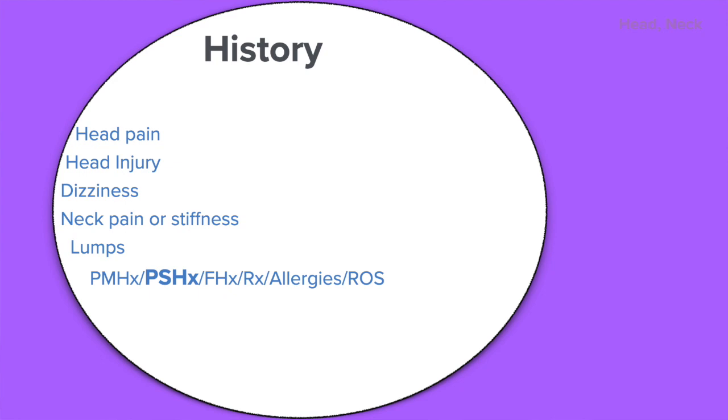Specifically to the head, think about asking about migraines, histories of headache, any concussions, history of brain injury or head injury, as well as past surgical histories. You want to know about family medical history, particularly in terms of the head — think about migraine, brain cancers, neurological diseases.